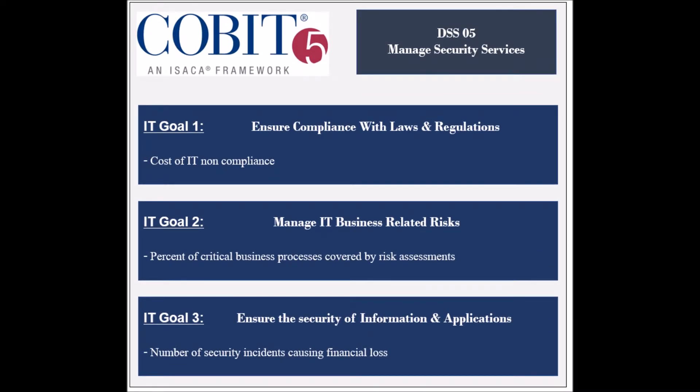The process supports the achievement of three IT-related goals. The first goal is to ensure IT compliance with laws and regulations. Its achievement is measured by the cost of IT non-compliance and by the number of IT non-compliance issues causing public embarrassment. The second goal is to manage IT-related business risks, and its achievement is measured by the percent of critical business processes covered in risk assessments and by the frequency of update of the risk profile.